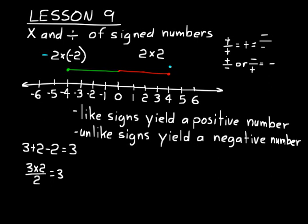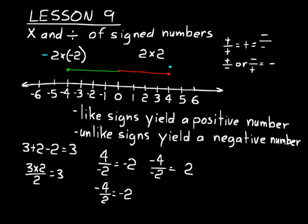One way to understand division of signed numbers: say you had four divided by negative two. Just do the absolute value part first — four divided by two equals two — then add the negative back in and say the opposite of two, so your answer is negative two. That works even for negative four over two, or negative four over negative two, where the opposite of the opposite of two is positive two.